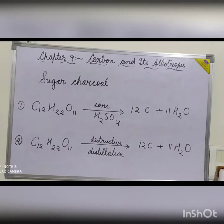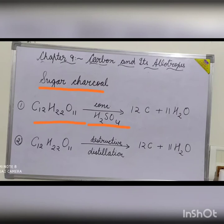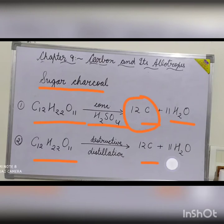Sugar charcoal is the purest form of amorphous carbon. It is prepared by two processes. First, when concentrated H₂SO₄ (sulphuric acid) is poured over sugar, it acts as a dehydrating agent and absorbs water from the sugar, leaving behind carbon — this carbon is called sugar charcoal. The second method is the destructive distillation of sugar, which also yields sugar charcoal and water.